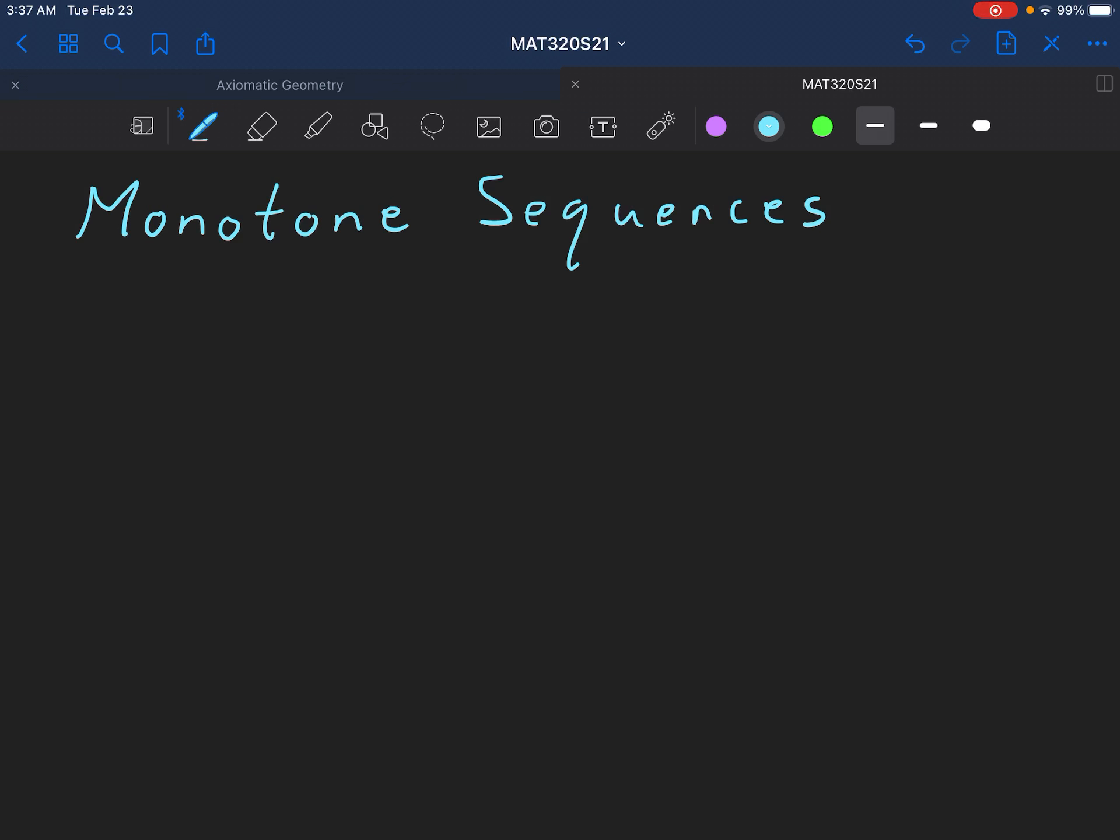Let's talk about monotone sequences. A sequence has an order, just like we've been discussing. So we have say x_j where the j's are in the naturals, so we have x_1, x_2, x_3, x_4 and so on. And we say definition.